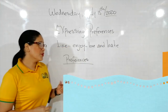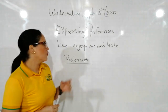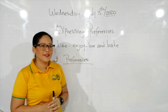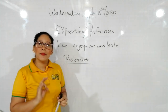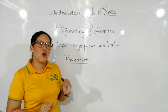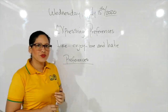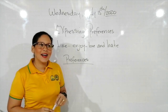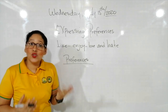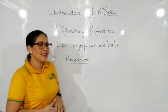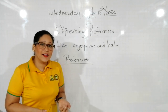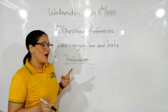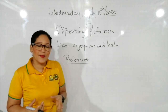Cuando vamos a trabajar las preferencias, nosotros debemos trabajar con estos verbos like, enjoy, love and hate. También vamos a trabajar con el verbo like, que significa gustar. Para trabajar las preferencias con like, podemos decir que algo nos gusta o que algo no nos gusta. Yo puedo decir I like broccoli o I don't like broccoli — de forma positiva y negativa.